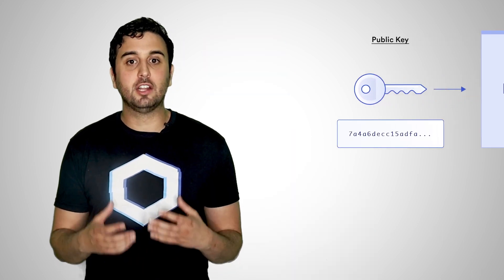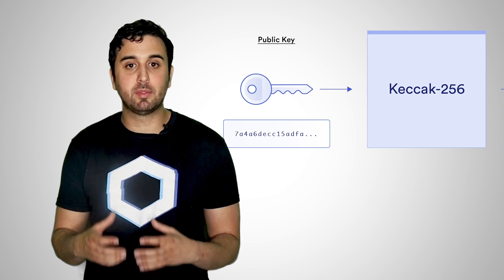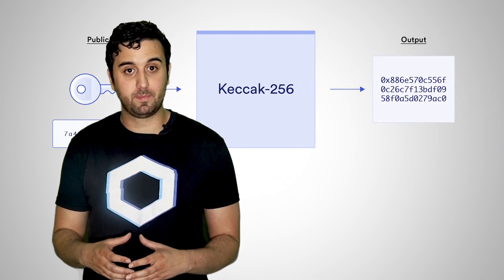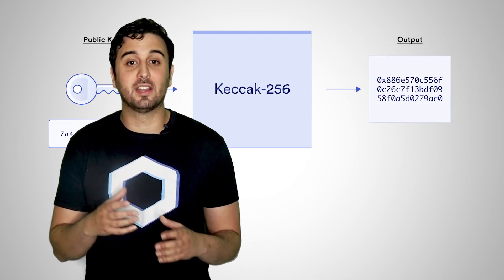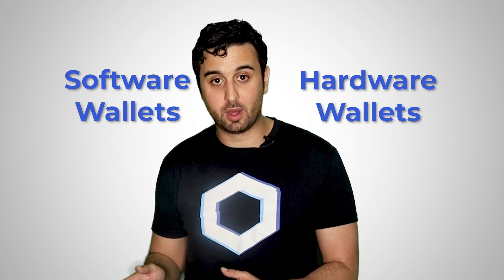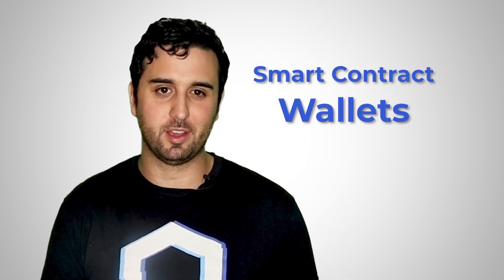Wallets typically generate addresses by taking the hash of a public key. For example, in Ethereum wallets, the address is generated by hashing the public key with the Keccak-256 algorithm and taking the last 20 bytes. There are two main types of crypto wallets: software wallets and hardware wallets. There are also smart contract wallets, but we'll cover those in a future video.